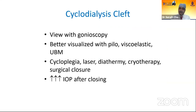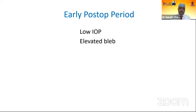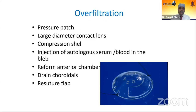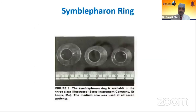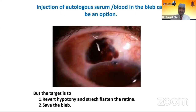Cyclodialysis cleft is another notorious entity — it is rarely detected and rarely visible easily because gonioscopy is difficult in a hypotonous eye. Better visualization with pilocarpine, viscoelastic, and UBM. Treatment options include cycloplegia, laser, diathermy, cryotherapy, and surgical closure. Increased IOP is noted after cleft closure. In the early post-operative period with low IOP and elevated bleb, think of overfiltration. Options include pressure patch, large-diameter contact lens, compression suture, injection of autologous serum or blood in the bleb, and reform of the anterior chamber. It may be necessary to drain the choroidals and resuturing the flap is the last option.